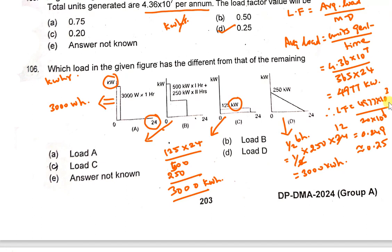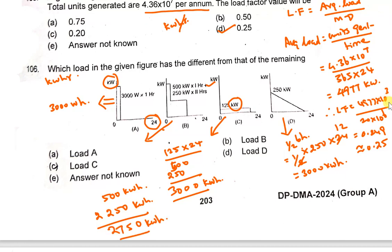Another load gives 500 kilowatt-hours. Adding the values, one load totals 2700 kilowatt-hours.